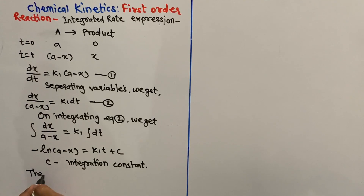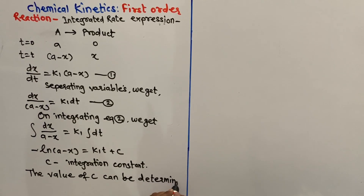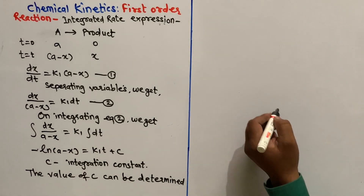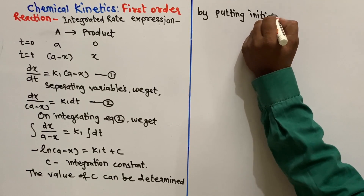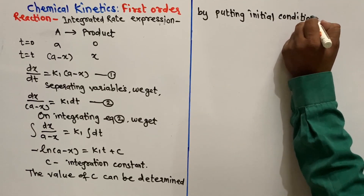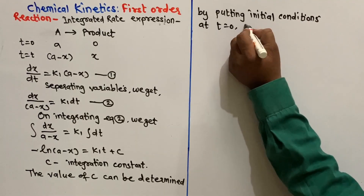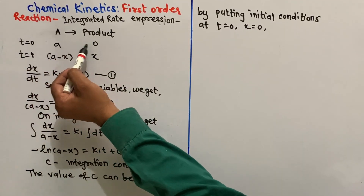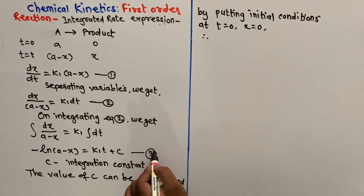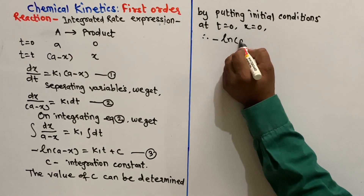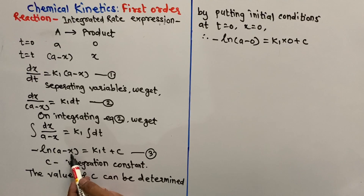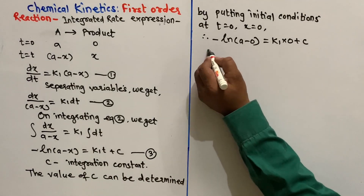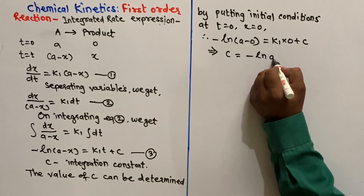The value of c can be determined by putting in the initial conditions: at t equals 0, x equals 0. Therefore, from equation number 3, we have minus log of (A minus 0) is equal to k1 into 0 plus c. So the value of c is equal to minus log of A — say this as equation number 4.